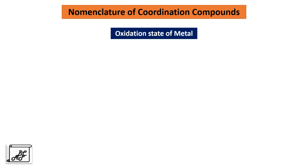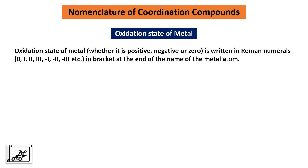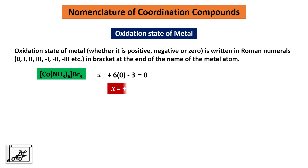Now let's understand how to write the oxidation state of a metal. The oxidation state — whether positive, negative, or zero — is written in Roman numerals (0, I, II, III, -I, -II, -III, etc.) in brackets at the end of the name of the metal atom. For example, in Co(NH3)6Br3: we consider the oxidation state of cobalt as X. Ammonia is a neutral ligand so it has no charge, whereas bromide is a uninegative ion. So X + 6(0) - 3 = 0, giving X = +3. The oxidation state of cobalt is +3.